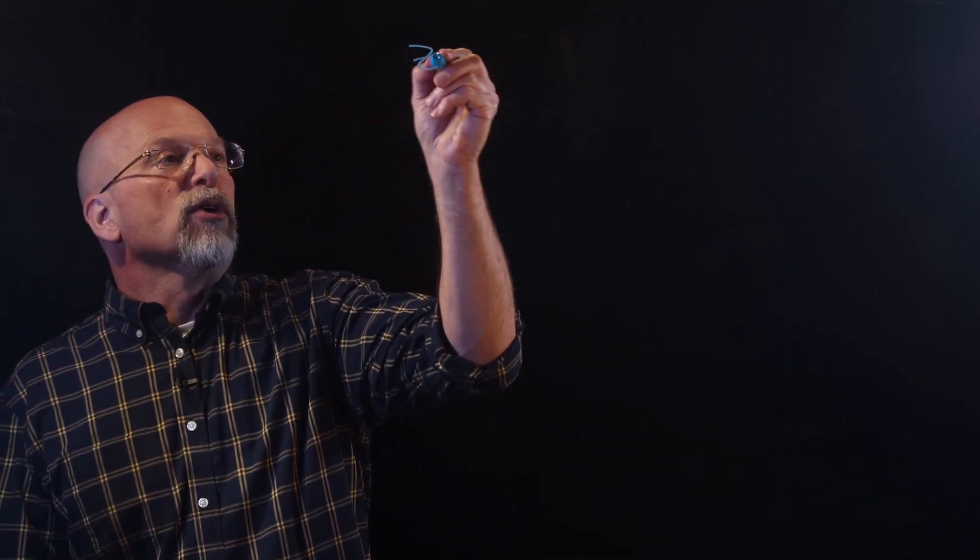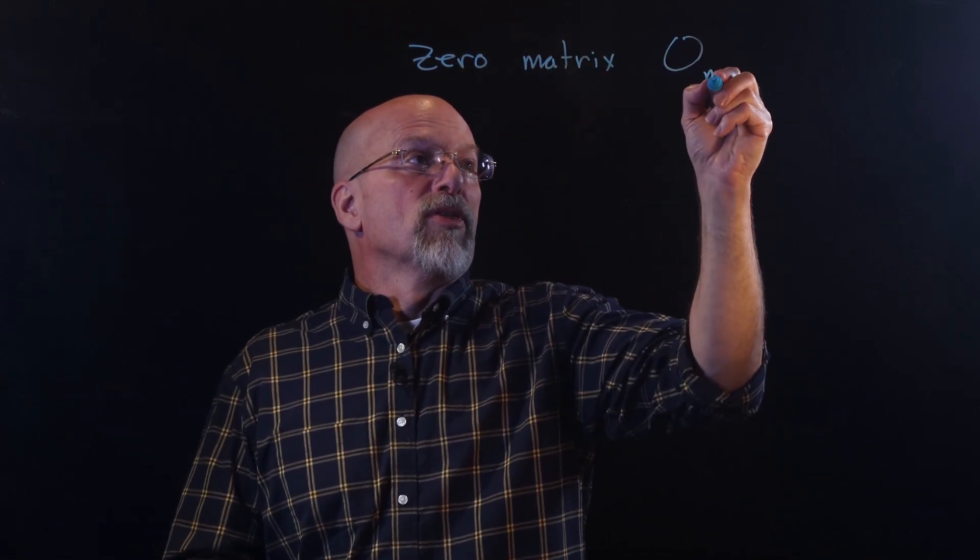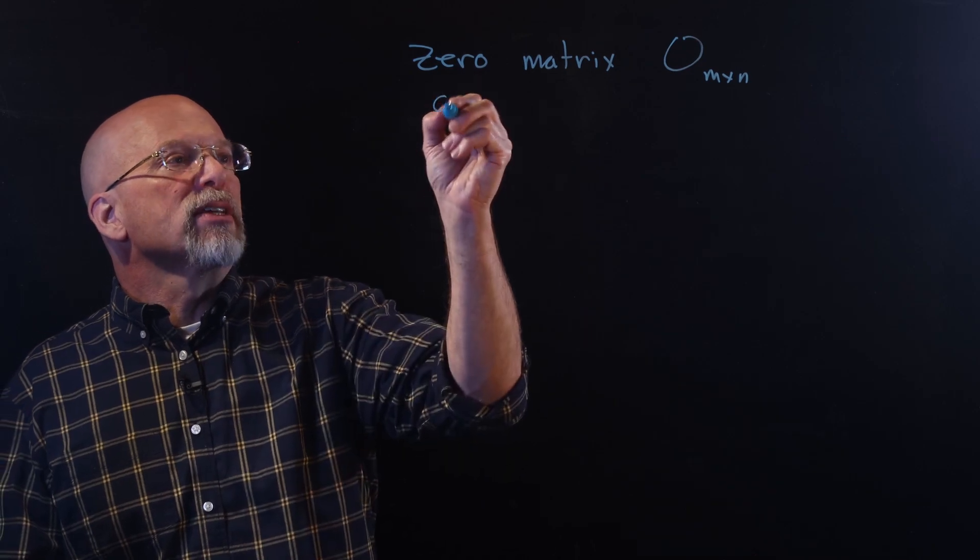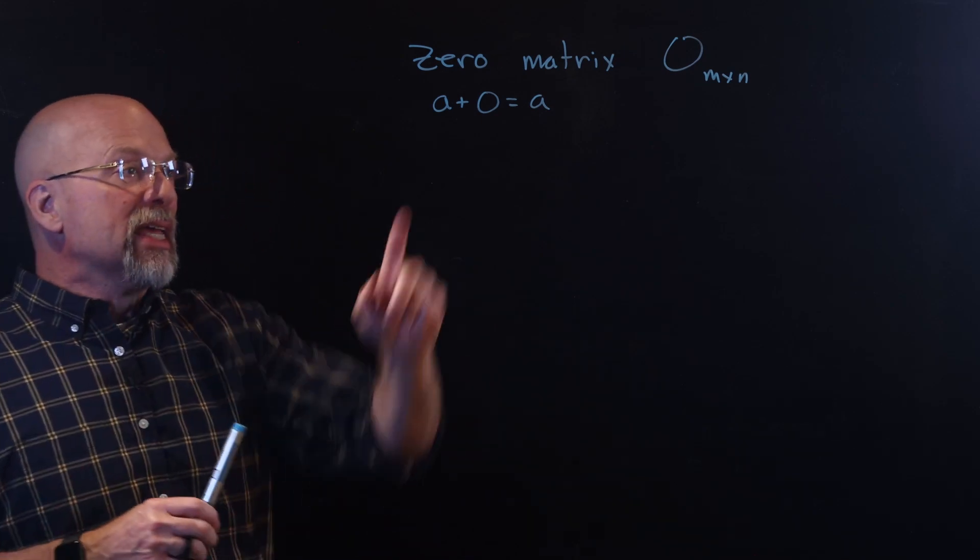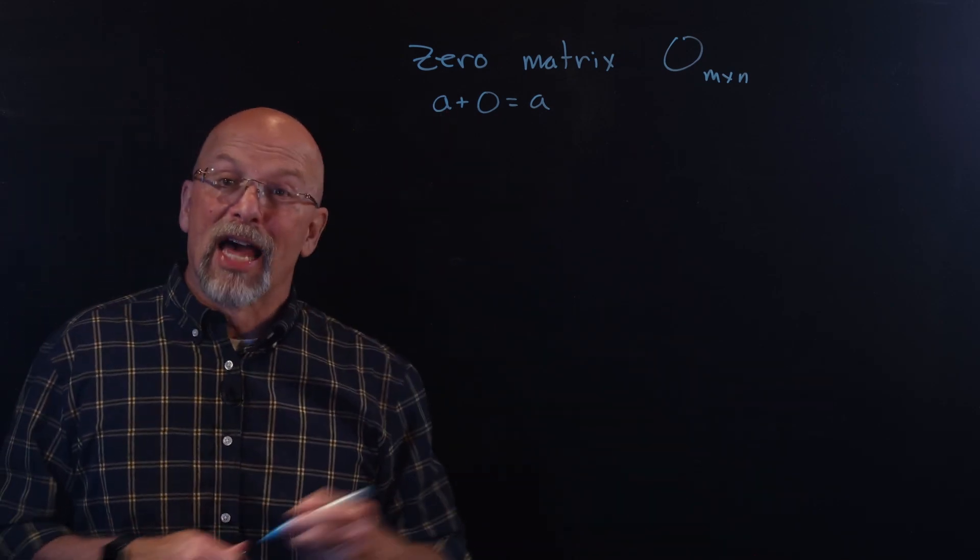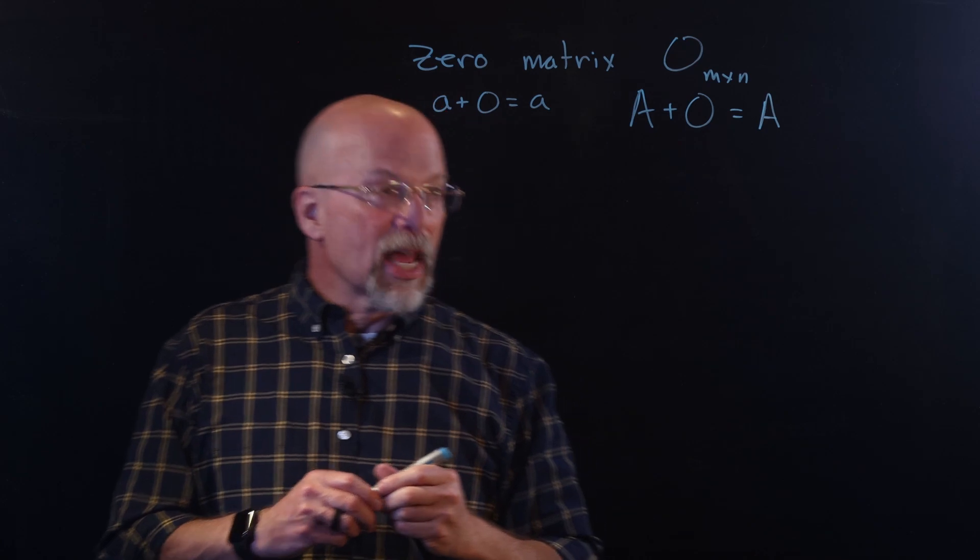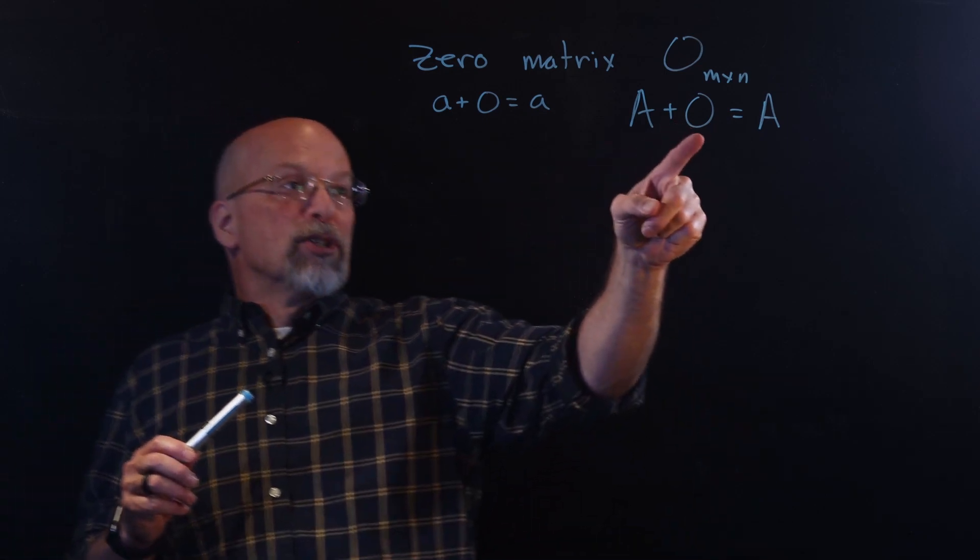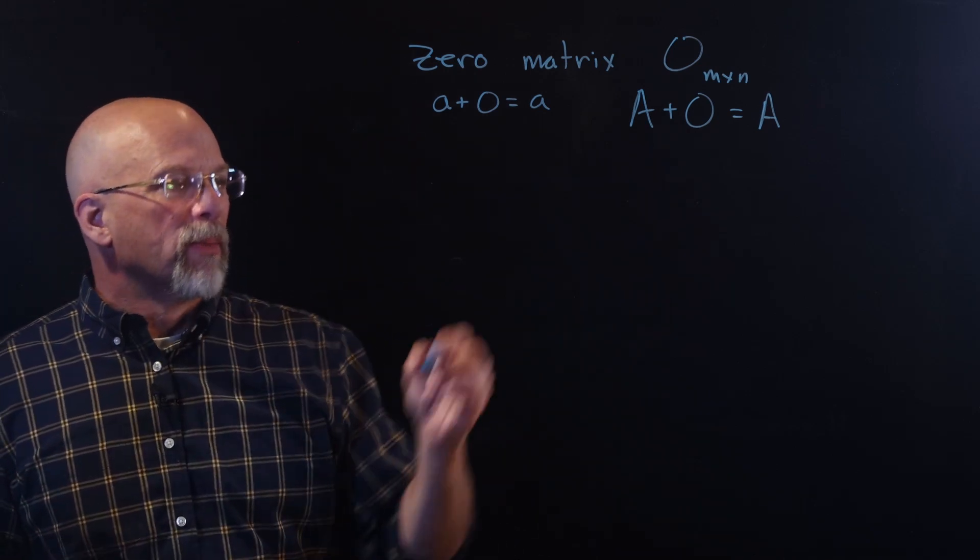Now, in the last lesson, we talked about something called the zero matrix, and it was denoted with a zero with the M by N to show its order. In mathematics or in basic arithmetic, we have this idea that anything added to zero, the zero drops out. Anything added to zero is the original value that we were adding. Turns out the same is true in matrices, except this time, instead of adding just a constant zero, we're adding a zero matrix. Once again, the zero matrix has to be exactly the same dimensions, the same order as the matrix we're adding it to.